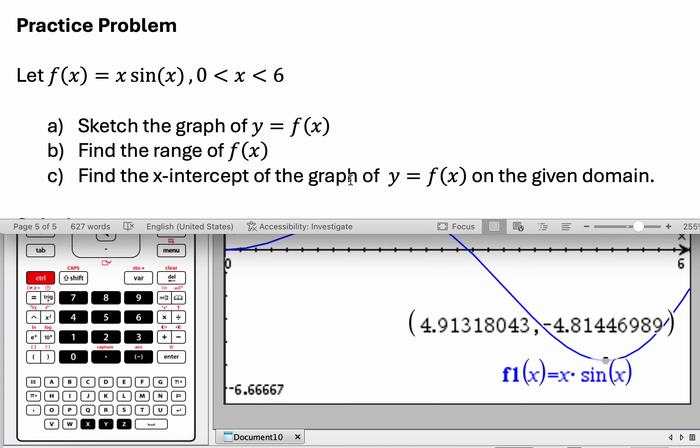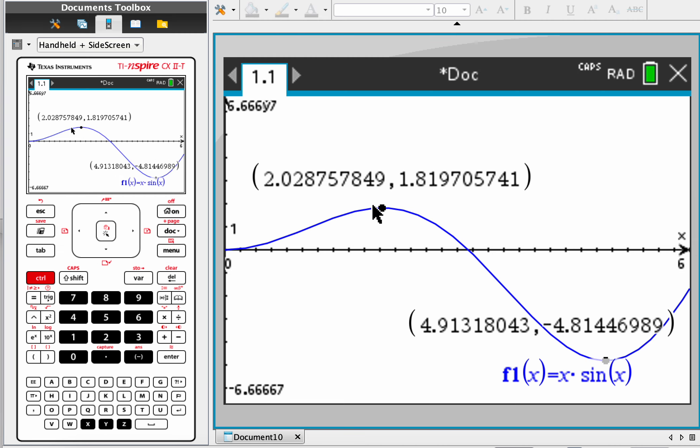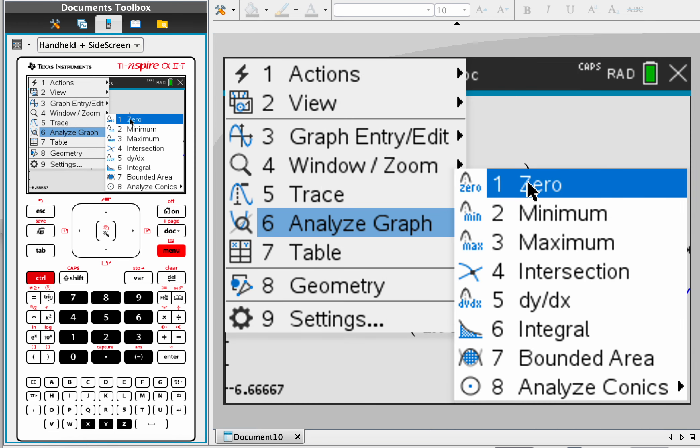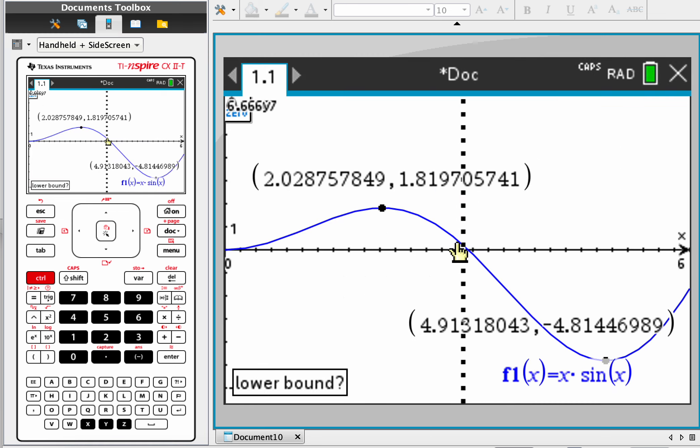Find the x-intercept of the graph in this domain. So you go to menu, analyze graph, zero, and from here to here, and that's it. Okay, so 3.14159 and so on. And that number should look a little familiar if you think about it. Okay. All right, so that's it.